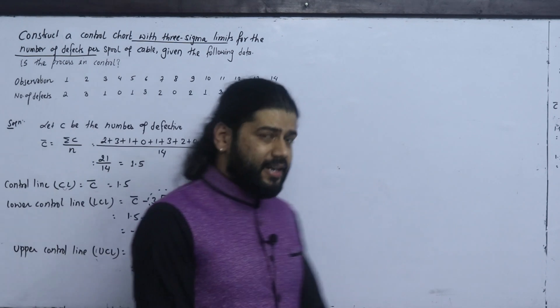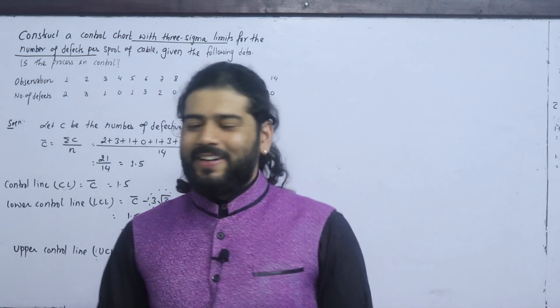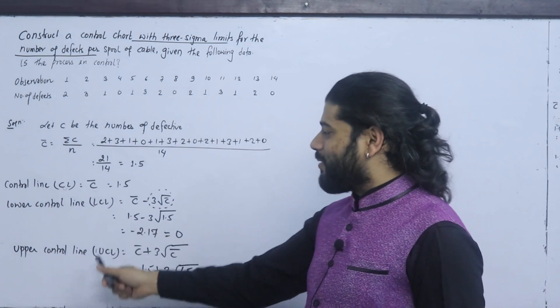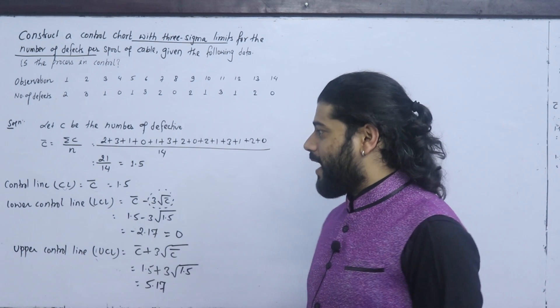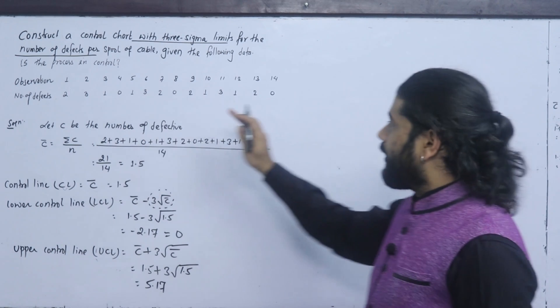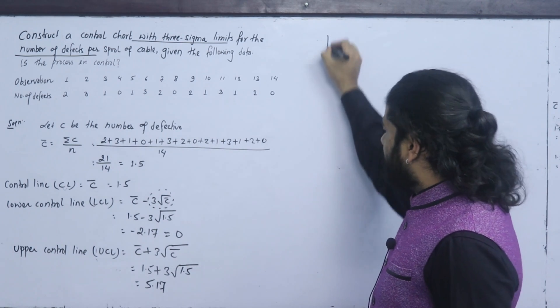So we have the control line, lower control limit, and upper control limit. Now we have to plot these values.